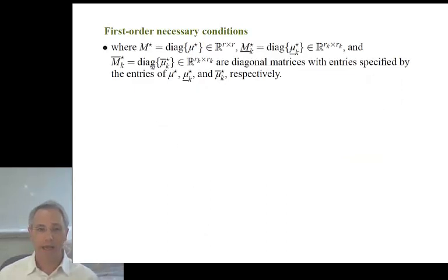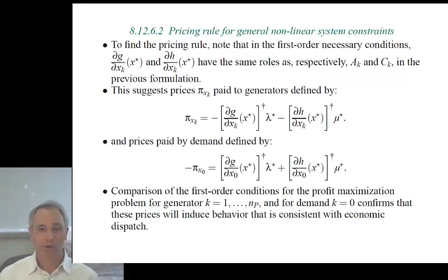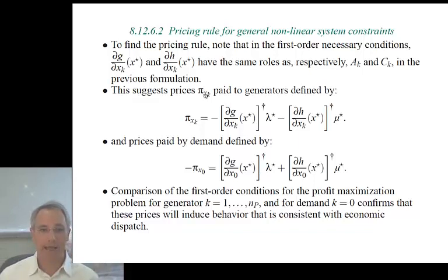To find the pricing rule, we look at the first order necessary conditions. It's clear that DG/DX_K and DH/DX_K evaluated at X*, the minimizer, have the same roles as the corresponding columns A_K and C_K in our previous formulation. That suggests prices PI_XK paid to the generators defined by PI_XK equal to minus DG/DX_K transpose lambda* minus DH/DX_K transpose mu*.